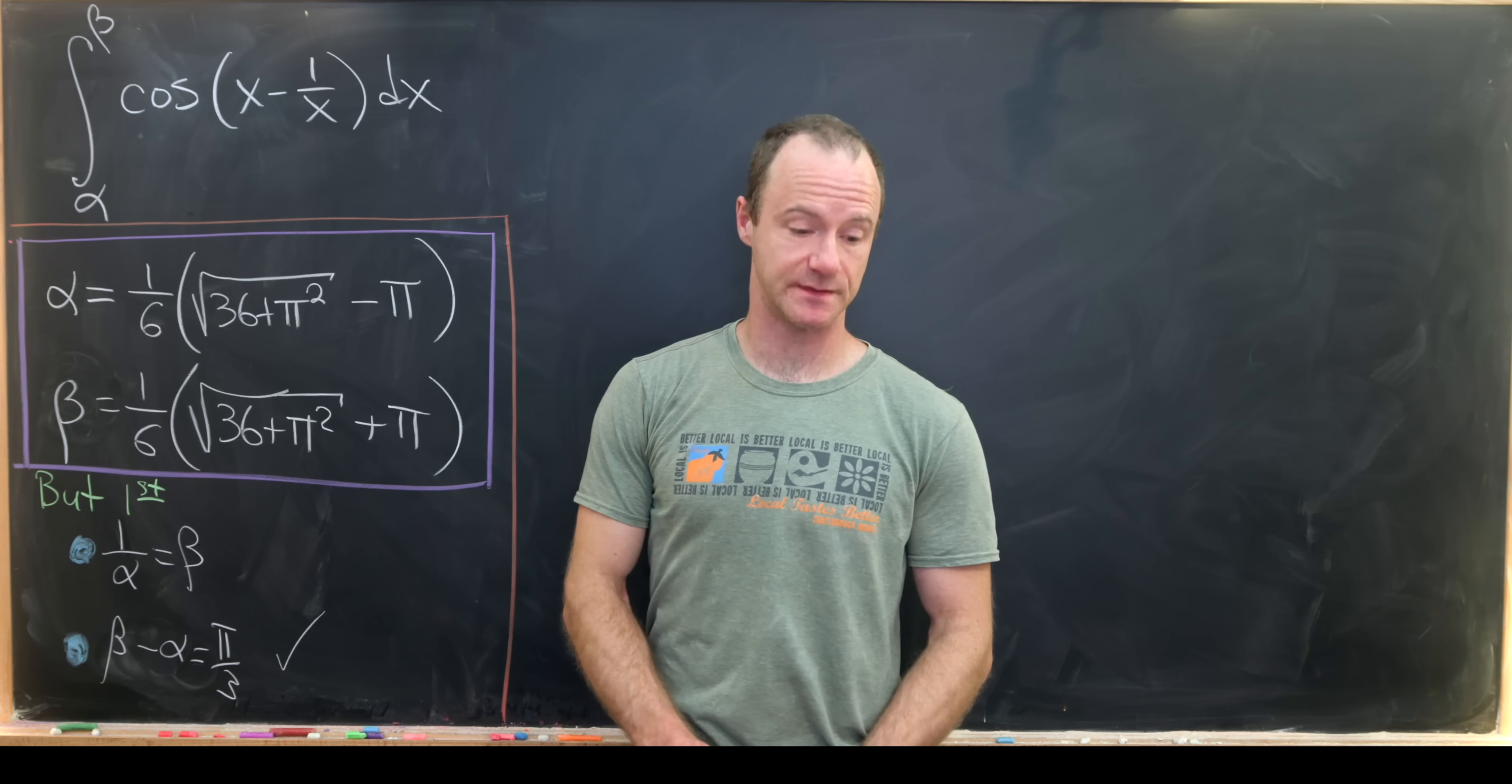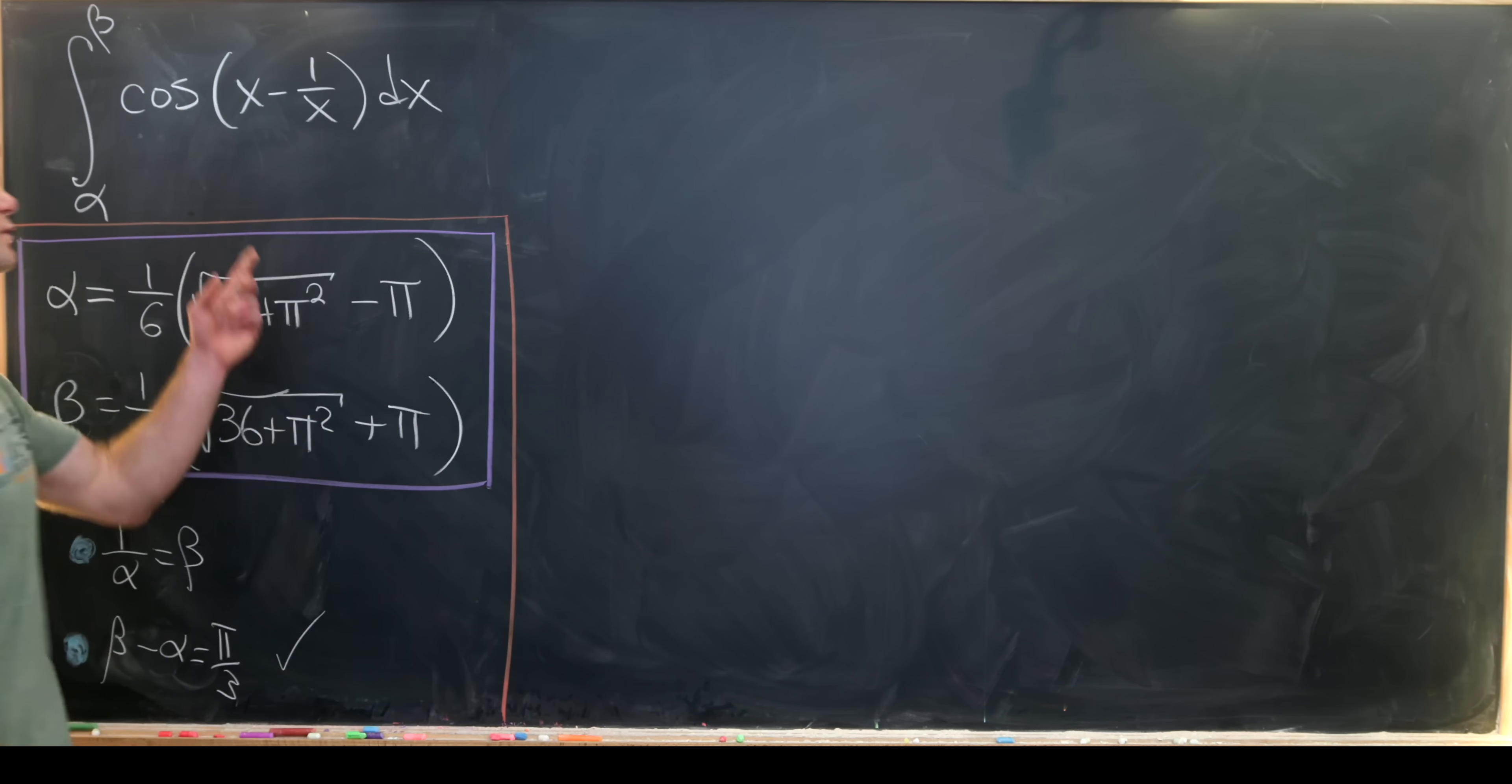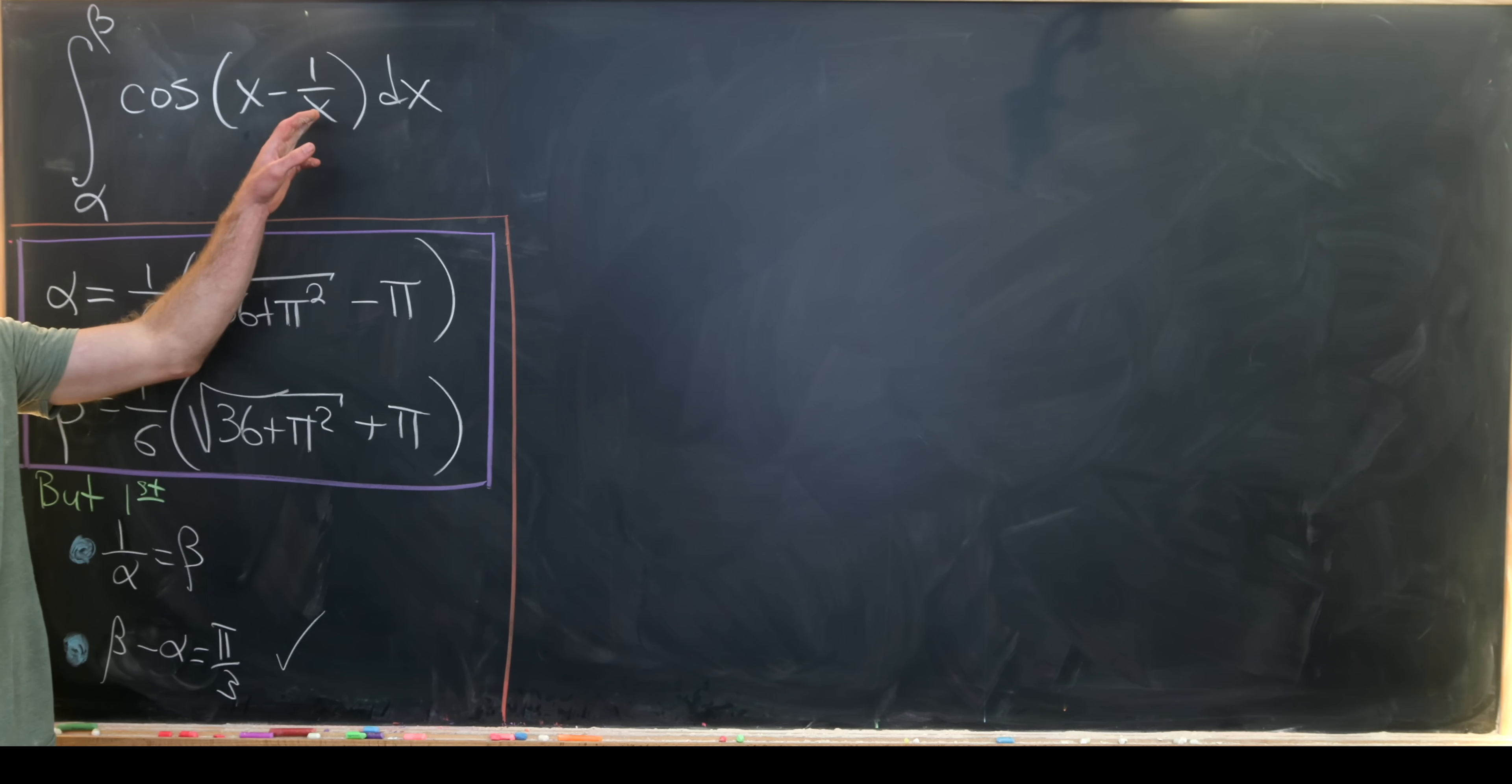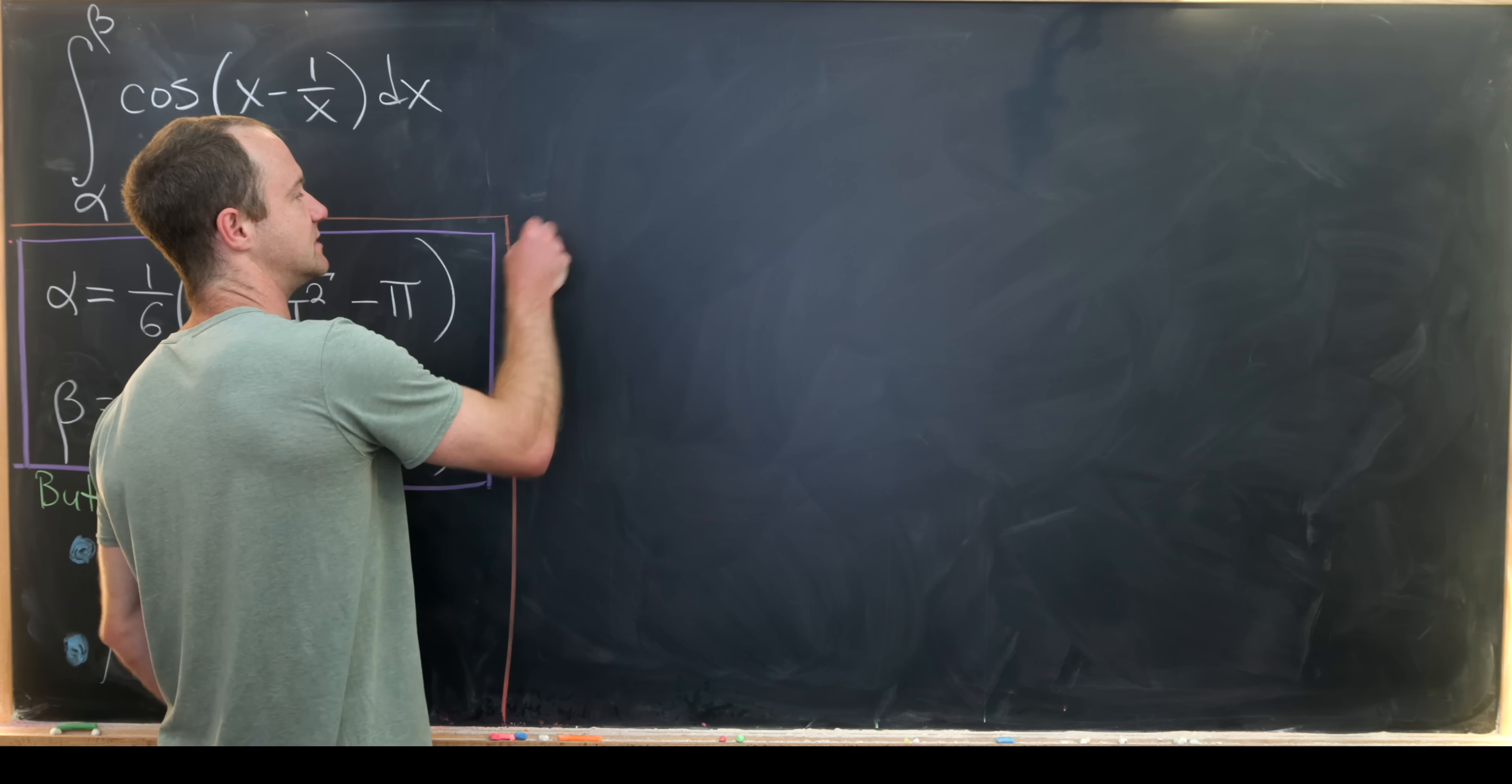So the first thing that we'll do is make a substitution. And maybe the most obvious substitution would be u equals x minus 1 over x. But that's not going to be the substitution we start with. Because in fact that won't take us down the right path. What we'll do instead is let u equal 1 over x.